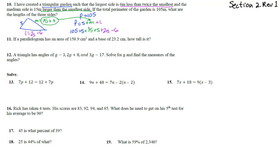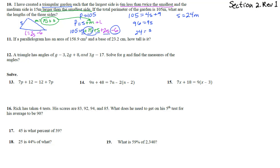Simplifying: 105 equals 4s plus 9. Subtracting 9 from both sides gives 96 equals 4s, then dividing both sides by 4 gives s equals 24.